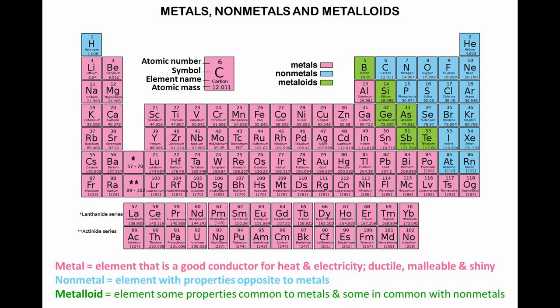Periodic tables are sometimes color-coded to classify certain kinds of elements. Here, a different color is used to distinguish between metals, nonmetals, and metalloids.